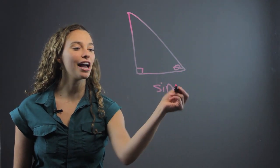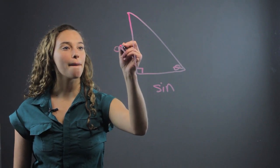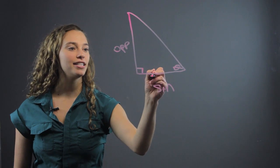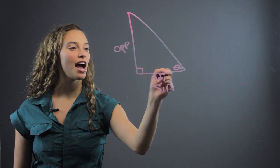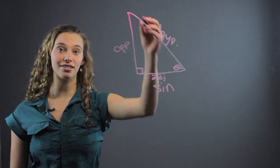We should become familiar with sine. So this is the opposite side, right, from the angle. This is the adjacent side to the angle and this is the hypotenuse of the triangle.